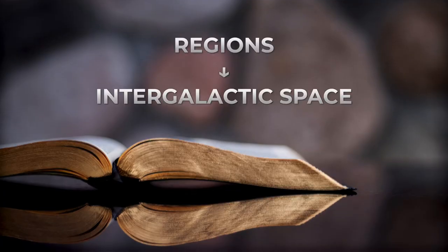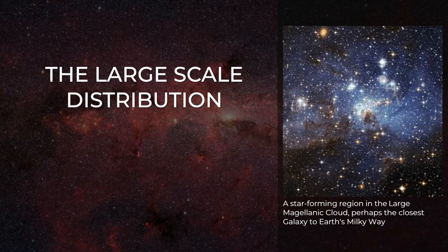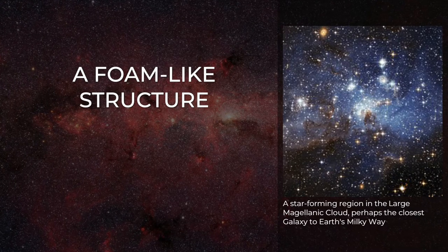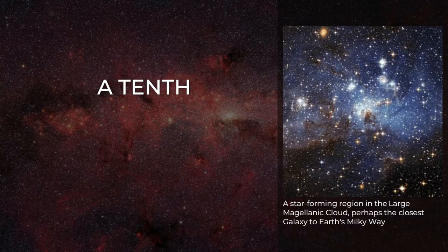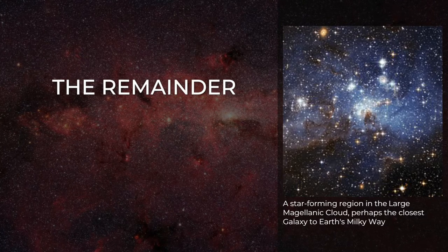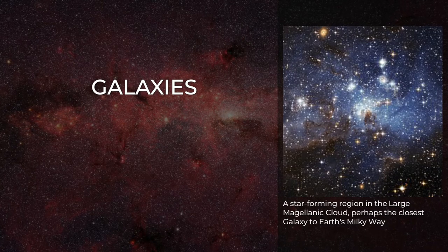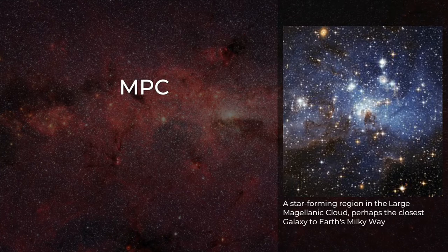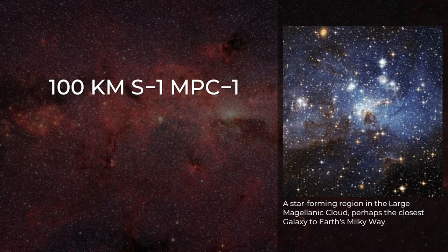Intergalactic space is the physical space between galaxies. Studies of the large-scale distribution of galaxies show that the universe has a foam-like structure, with groups and clusters of galaxies lying along filaments that occupy about a tenth of the total space. The remainder forms huge voids that are mostly empty of galaxies. Typically, a void spans a distance of 10 to 40 h^-1 Mpc, where h is the Hubble constant in units of 100 km s^-1 Mpc^-1.